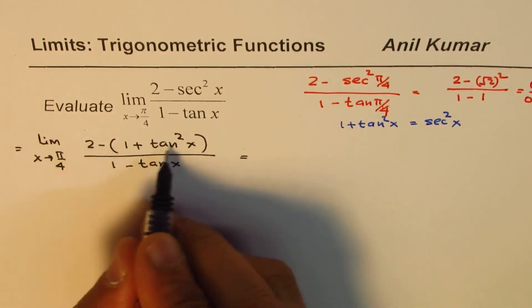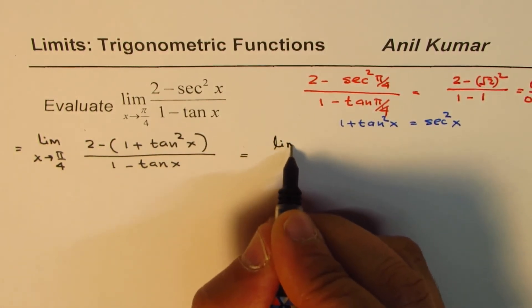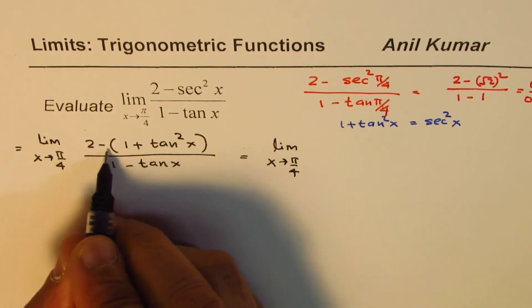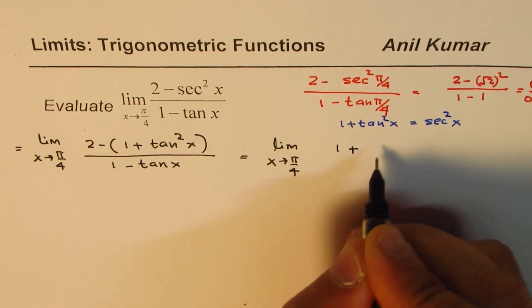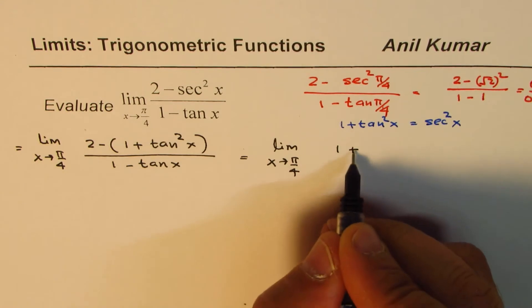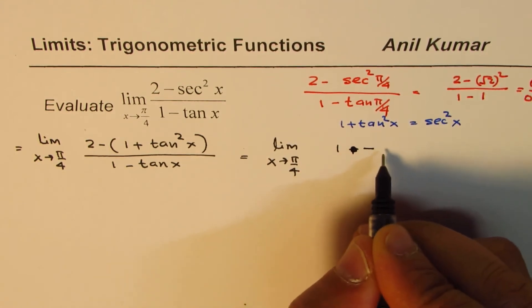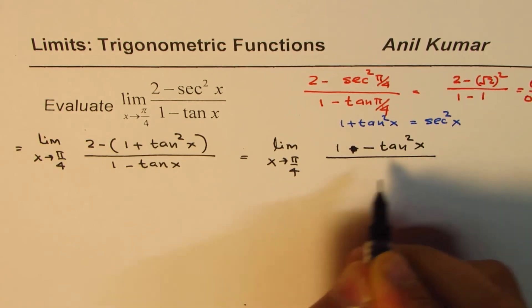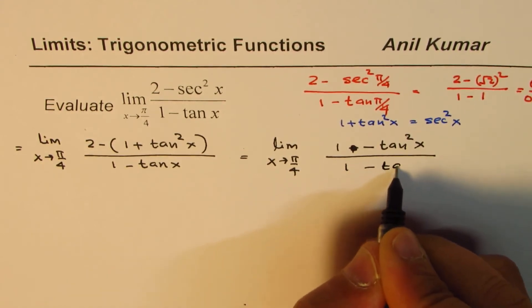Now let's open these brackets. We get: limit as x approaches π/4 of... 2 minus 1 is 1, and 1 plus negative tan²x gives us (1 - tan²x) / (1 - tan x).